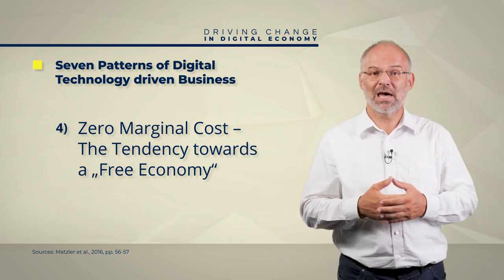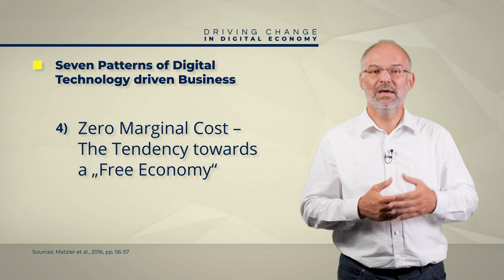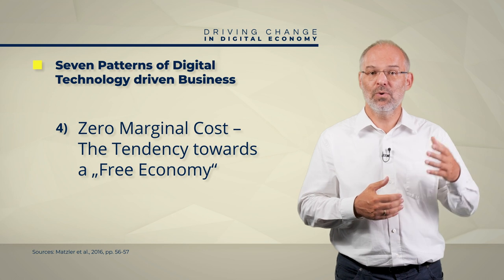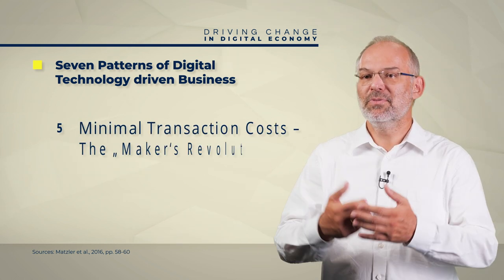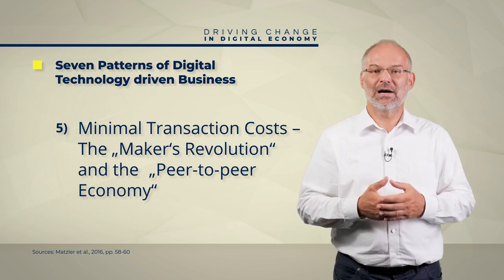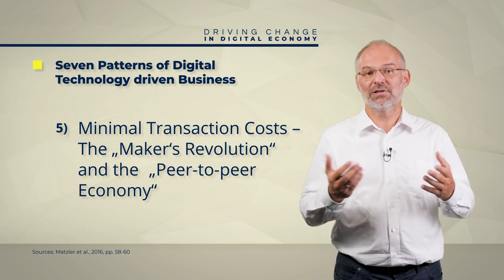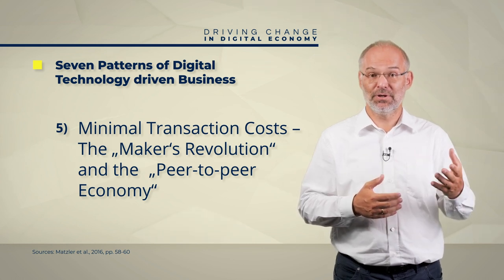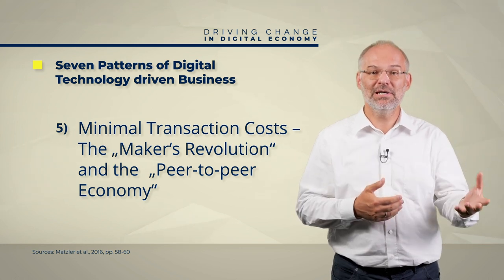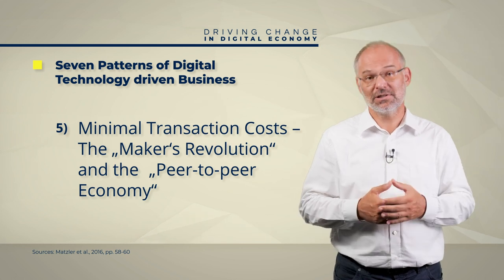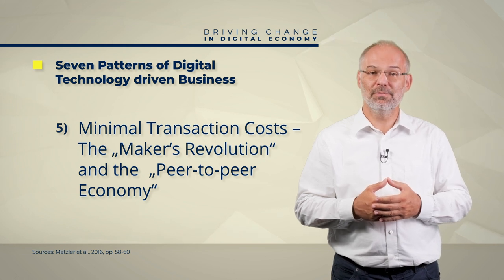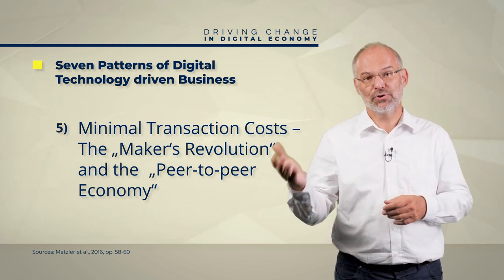Where algorithms and app-mapped services operate in an automated way and where sharing economy platforms make people willing to share their property with others at low cost. Number five, minimal transaction cost. Transaction costs are costs incurred in the initiation and execution of business transactions — for example, costs for finding suppliers, negotiation costs, coordination costs, quality costs, adjustment costs, etc. These costs can be so high that it is more economical to produce things yourself than to procure them.